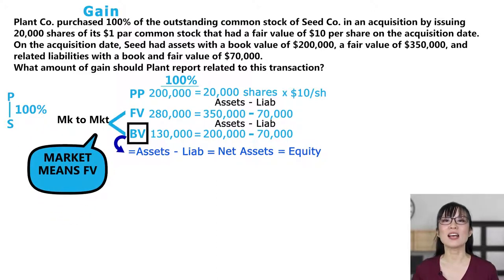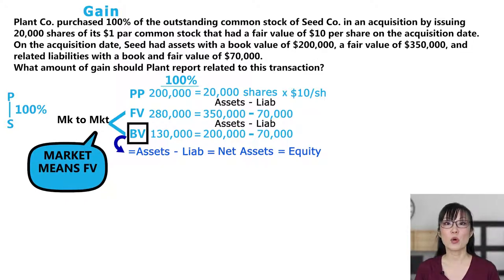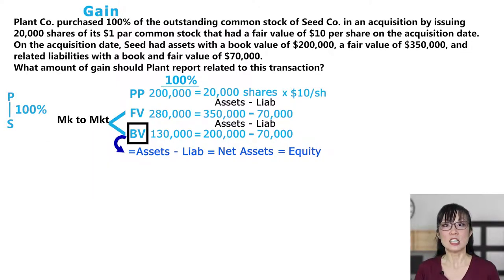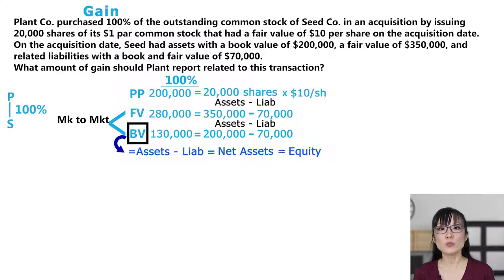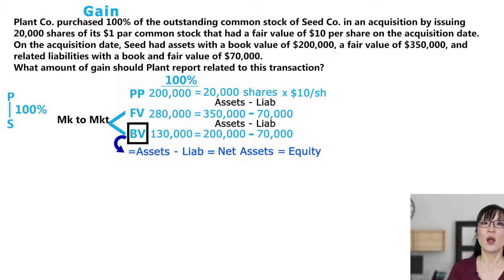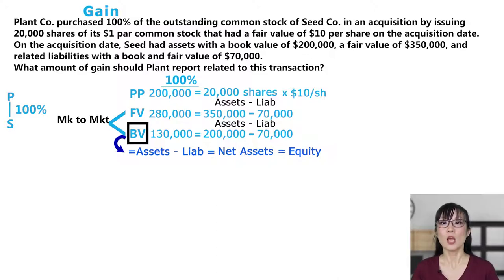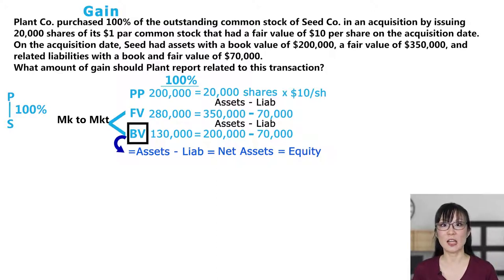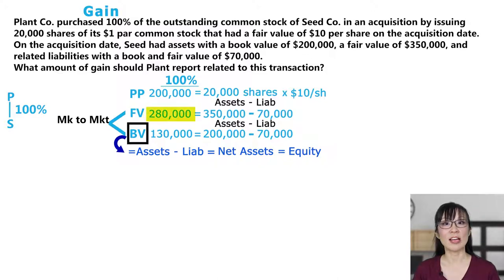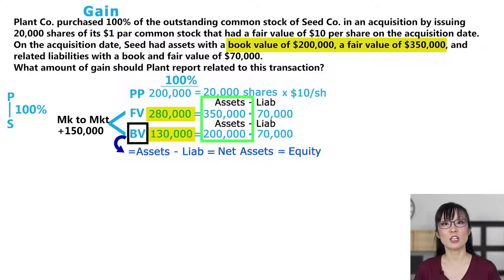Note the difference between book value and fair value as mark-to-market — this is the amount we have to record to get Seed's assets and liabilities to fair value. Seed bought its assets at historical cost a long time ago. Let's say it owned buildings in Manhattan for decades — those buildings are worth a lot more today. We care about what Plant bought them for today, on the acquisition date. Conservatism doesn't allow Seed to mark up its assets on its own, but now that Plant bought all of Seed, its assets get marked up to fair value on the parent's financials. That's $280,000 minus $130,000, which equals $150,000. The liabilities are the same for book and fair value, so no adjustment is required.